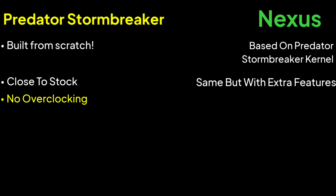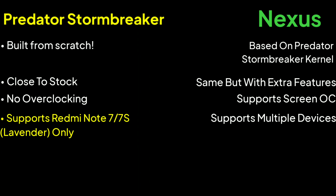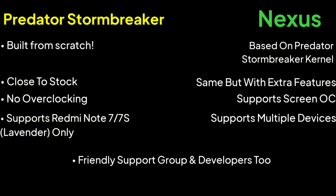Predator Stormbreaker Kernel doesn't support any kind of overclocking — like CPU, GPU, or even screen — whereas Nexus Kernel supports overclocking for screen only. Nexus Kernel supports multiple devices while Predator Stormbreaker Kernel only supports Lavender, which is the Redmi Note 7. Both kernels have a nice support group and the developers are friendly too.